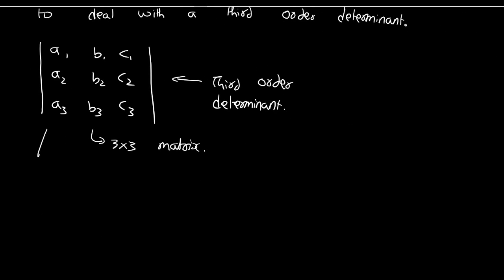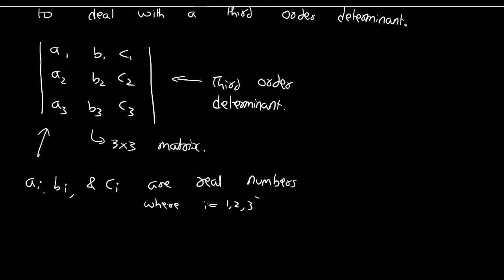In this third order determinant, A_i, B_i, and C_i are basically real numbers, where i is 1, 2, and 3. So all the numbers present in this three by three matrix or in this third order determinant are considered as real numbers. These real numbers are known as the entries or elements of the determinant.